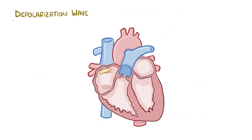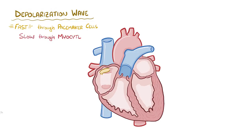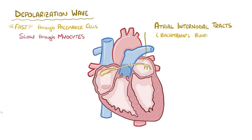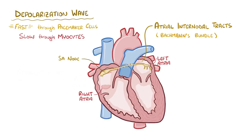The depolarization wave that comes out of the SA node moves really fast through the pacemaker cells throughout the heart, and moves more slowly through the atrial and ventricular myocytes. Some pacemakers lie along atrial internodal tracts, also called Bachmann's bundle, which connects the SA node to spots in the right and left atria, so that the depolarization wave can quickly reach atrial myocytes in both atria. When the atrial myocytes get depolarized, they contract, which pushes blood from the atria into the ventricles.